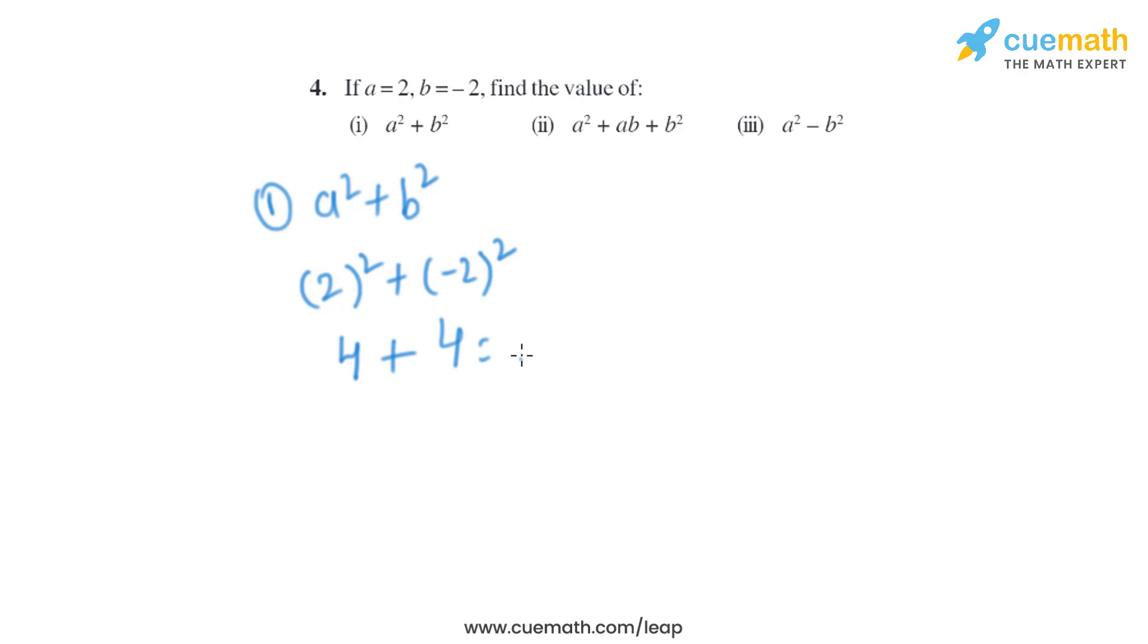So it will be 8. Now let's move on to the second part. The expression that is given is a squared plus ab plus b squared.